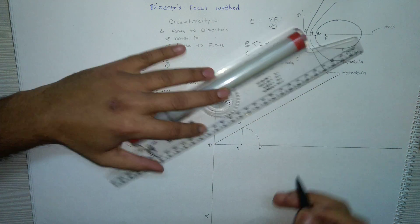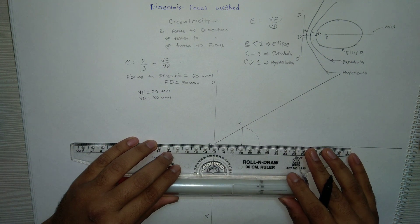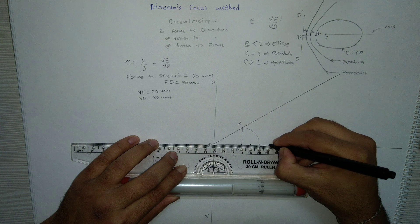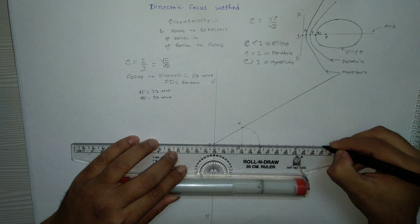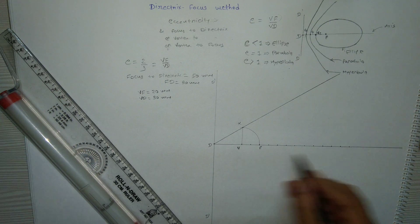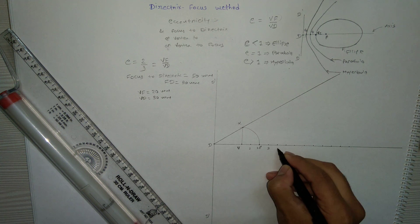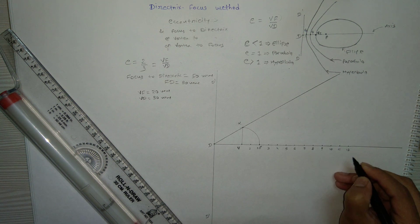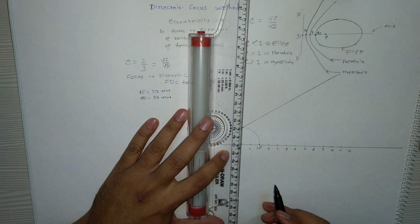Now, starting from point V, mark some points on the axis at one centimeter intervals. Name these points one, two, three, four, and so on. Initially mark some number of points — later, if required, we can add more.